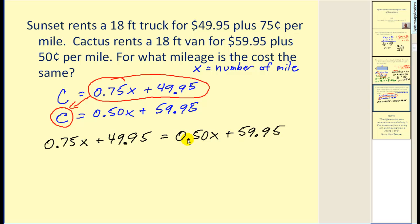Now, as before, if we wanted to eliminate the decimals, we could multiply through by 100. I'm not going to do that here. I'm just going to solve by isolating x. So I'll subtract 0.50x on both sides, and I'll also subtract 49.95 on both sides. Notice I have performed the same operations on both sides of the equal sign.